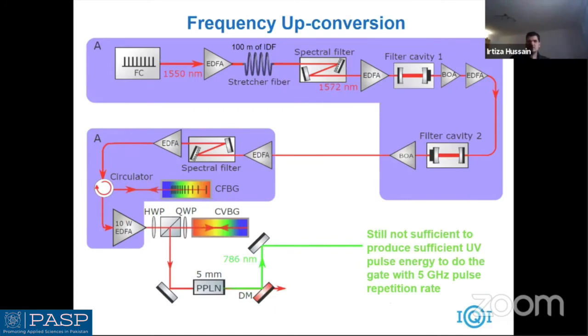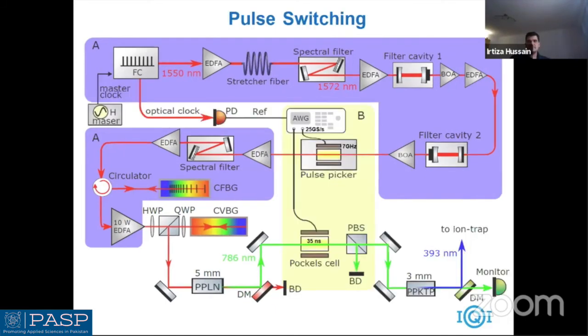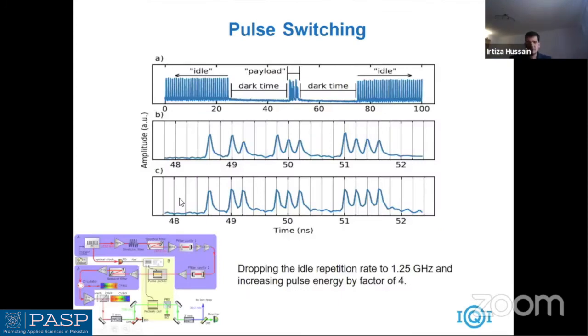Next step is the frequency upconversion. To resonate with the atomic transition we have to upconvert the frequency because we are doing all this stuff in telecom at 1572 nanometer light, but what we need is 393, this particular line. We have to upconvert this light carefully to resonate this atomic transition. We do this by using this non-linear technique, a standard technique using periodically-poled lithium niobate crystal. As a result we upconvert the frequency from 1572 to 786 nanometer and we have single-pass conversion efficiency about 50 percent.